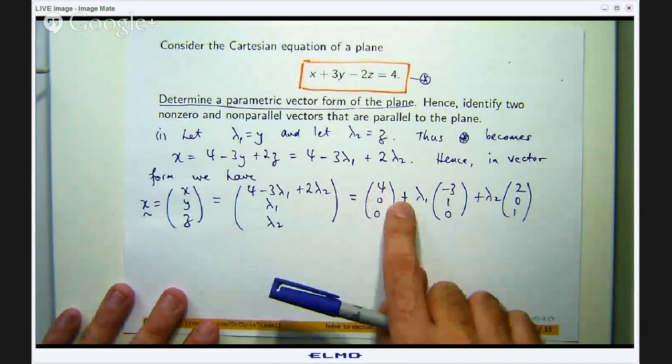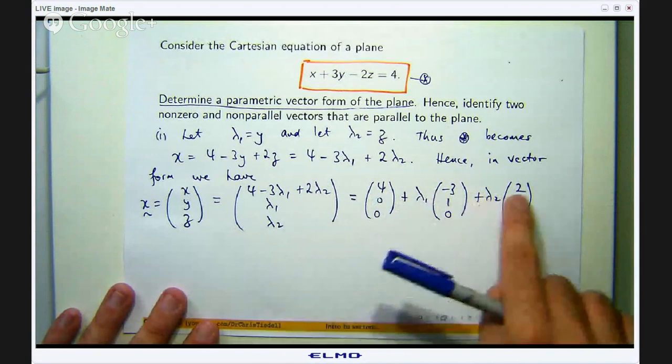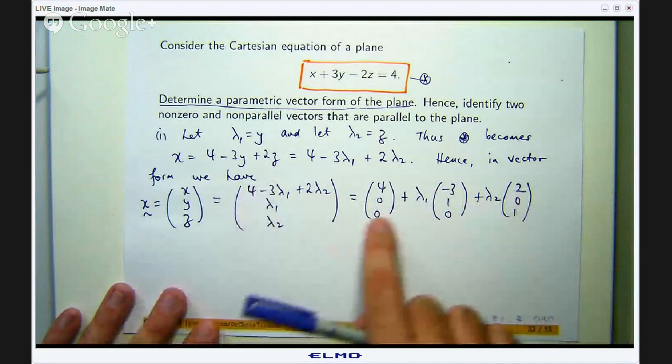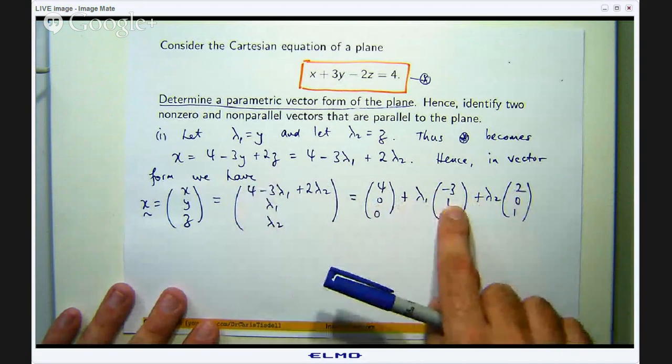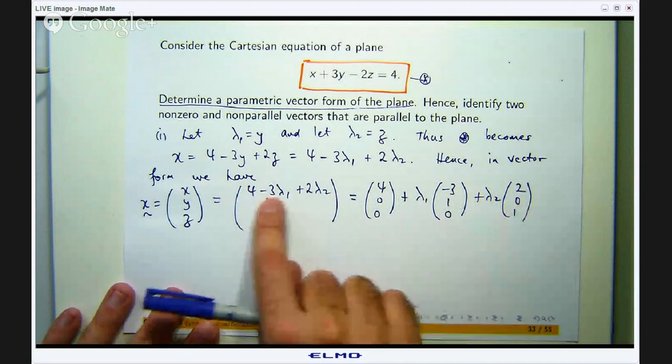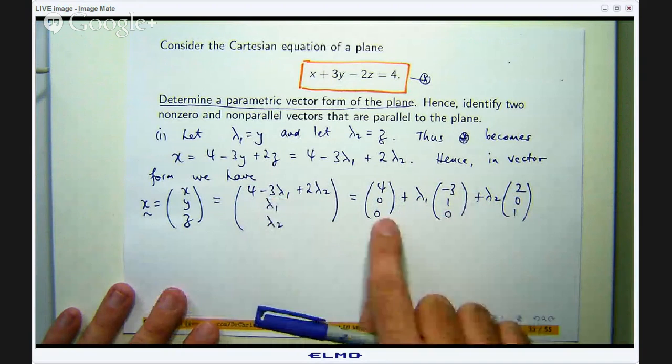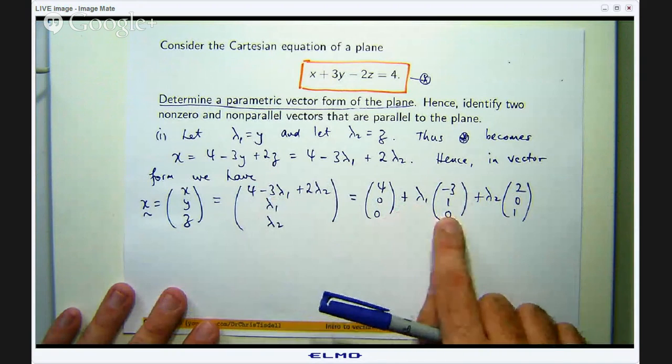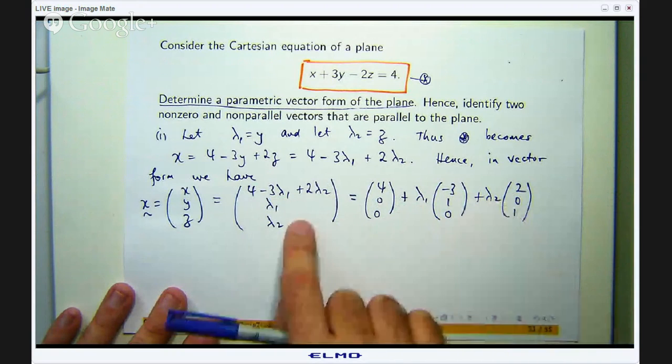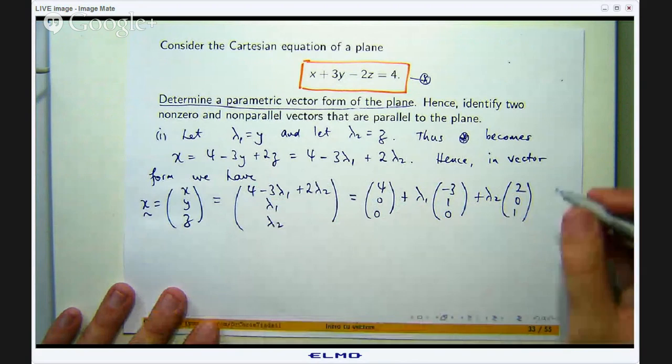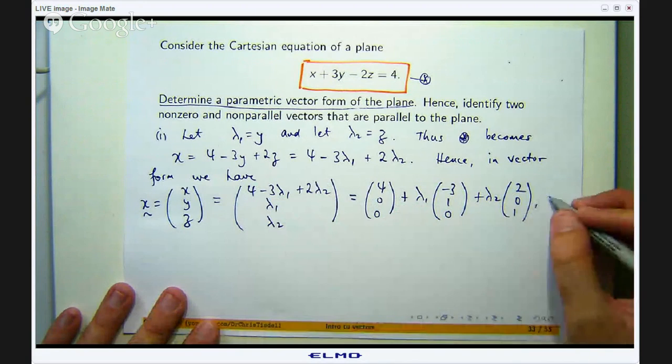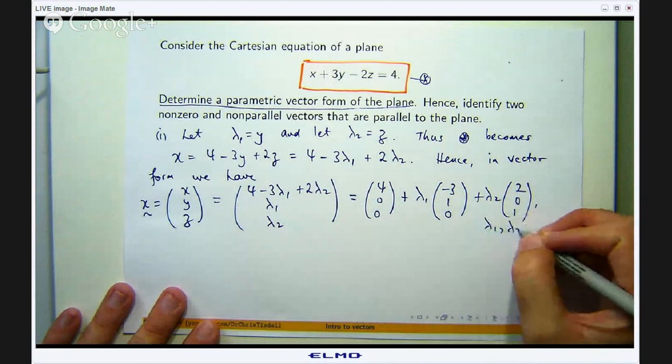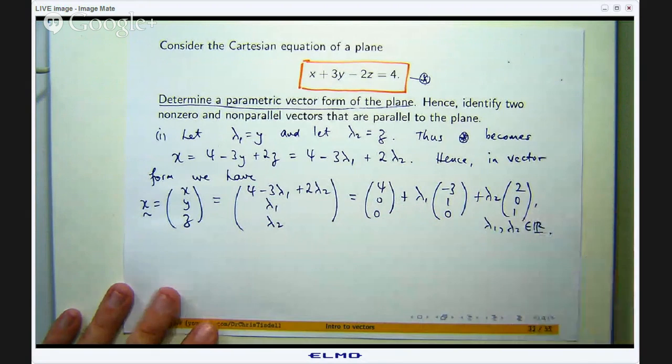So 4 plus negative 3λ1 plus 2λ2, that should be the first term. 0 plus 1 times λ1 plus 0λ2, that is the second term, which it is. And 0 plus 0 times λ1 plus 1 times λ2 should be the third component, if you like. Okay, so there we have it.